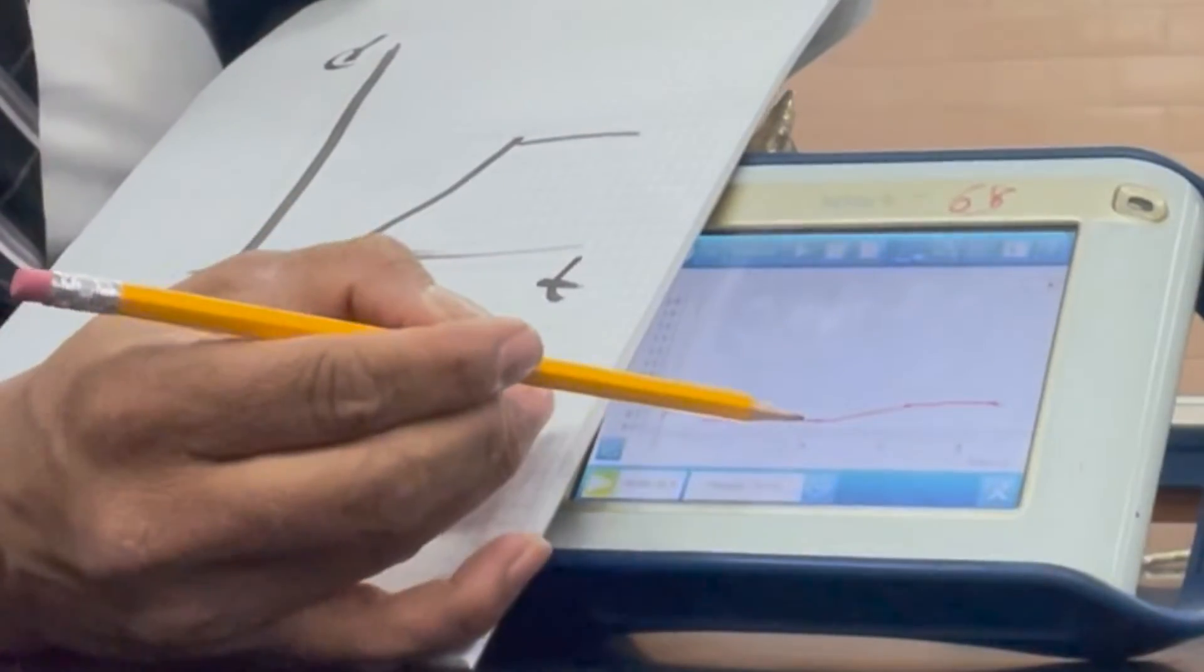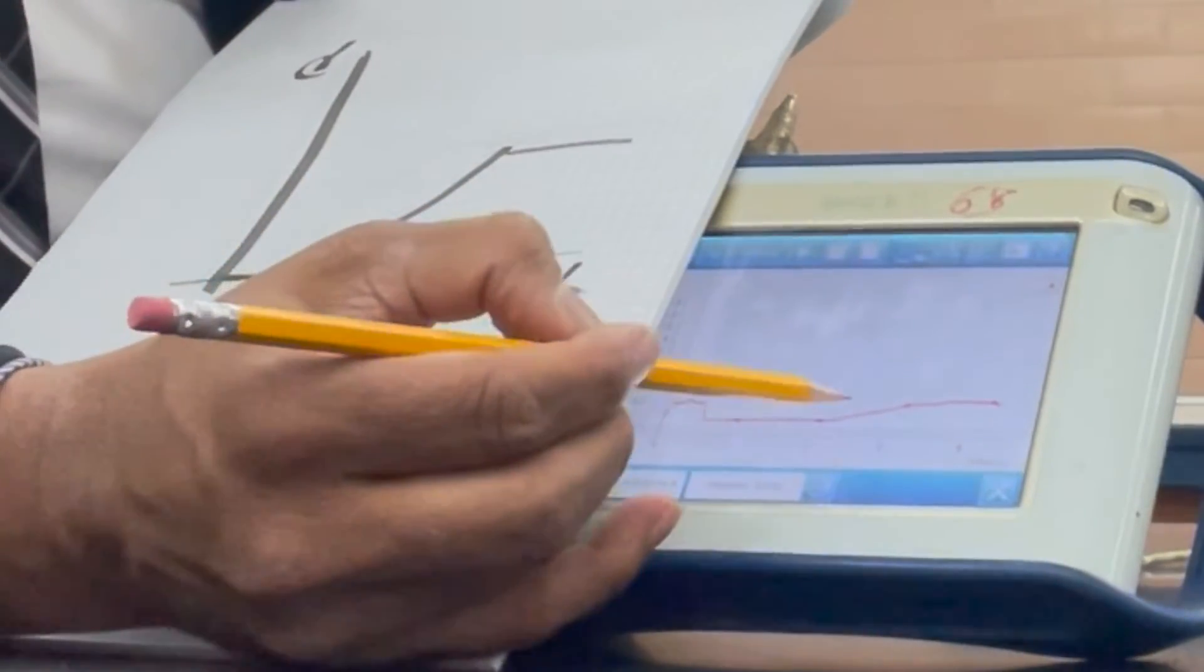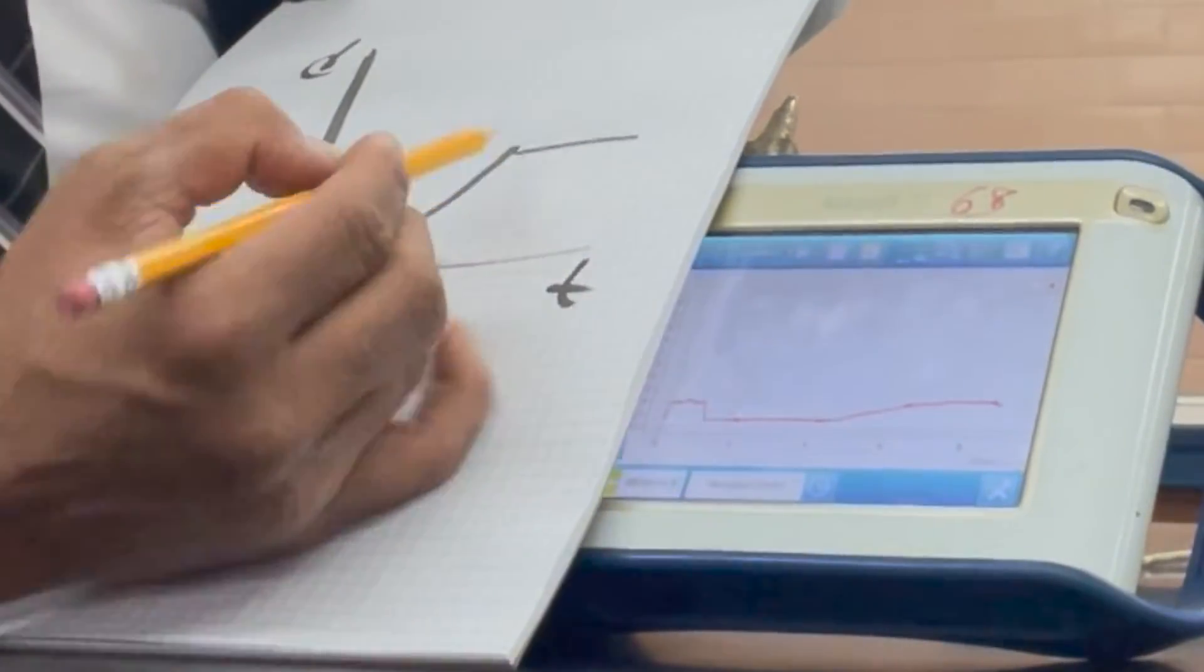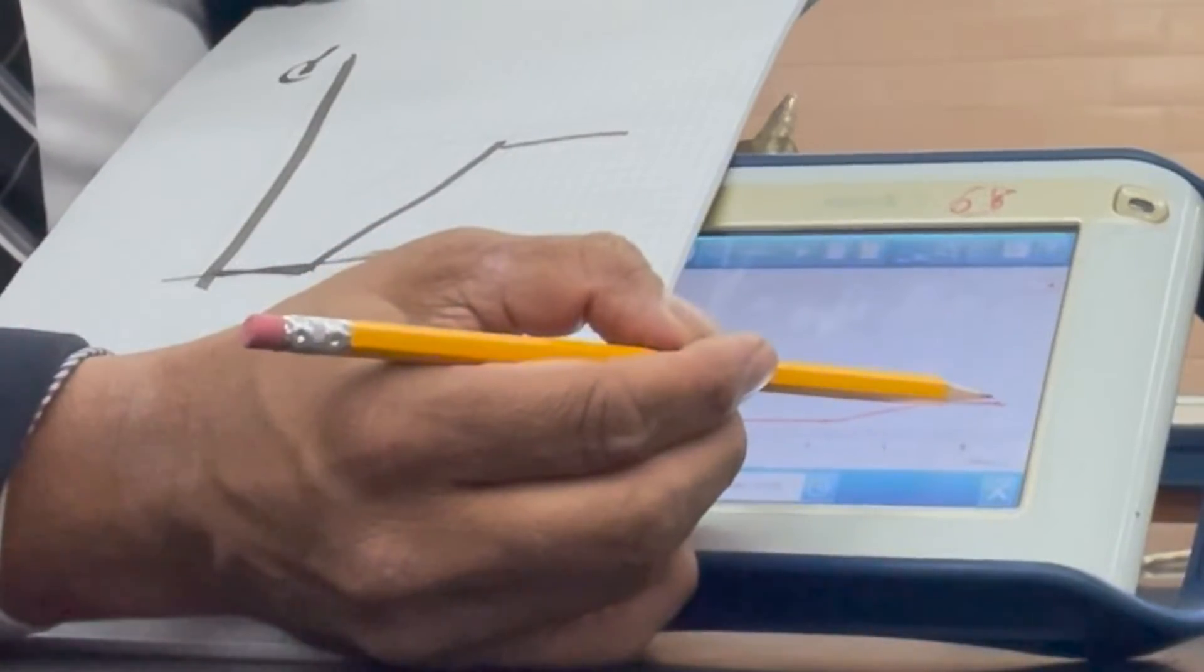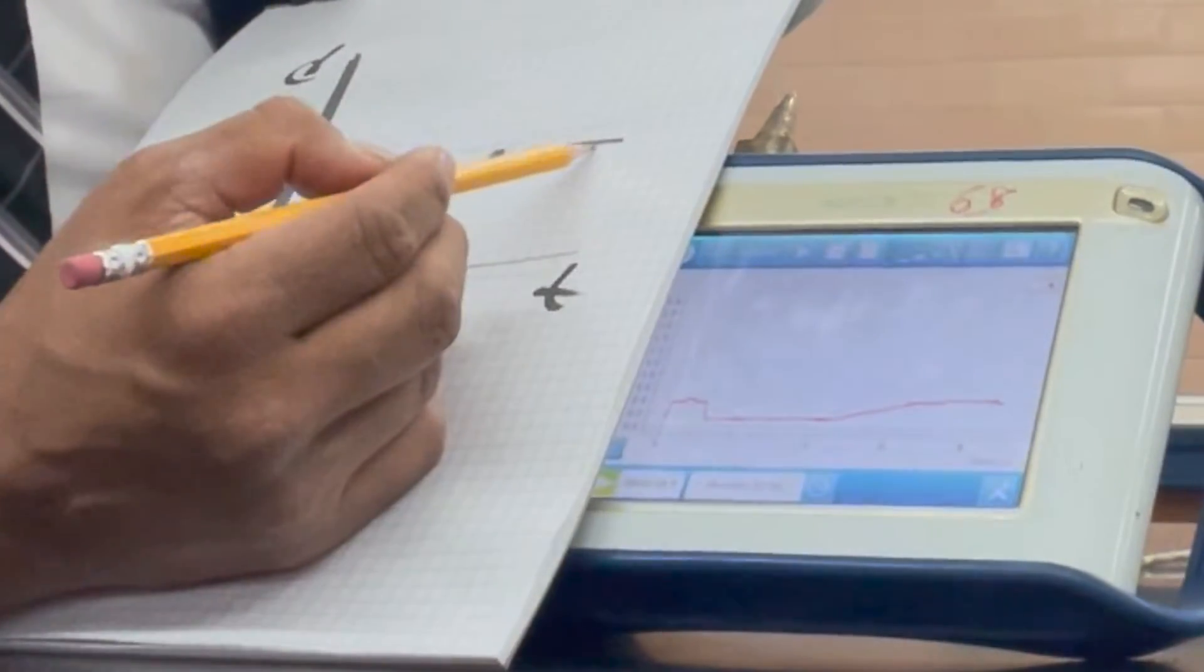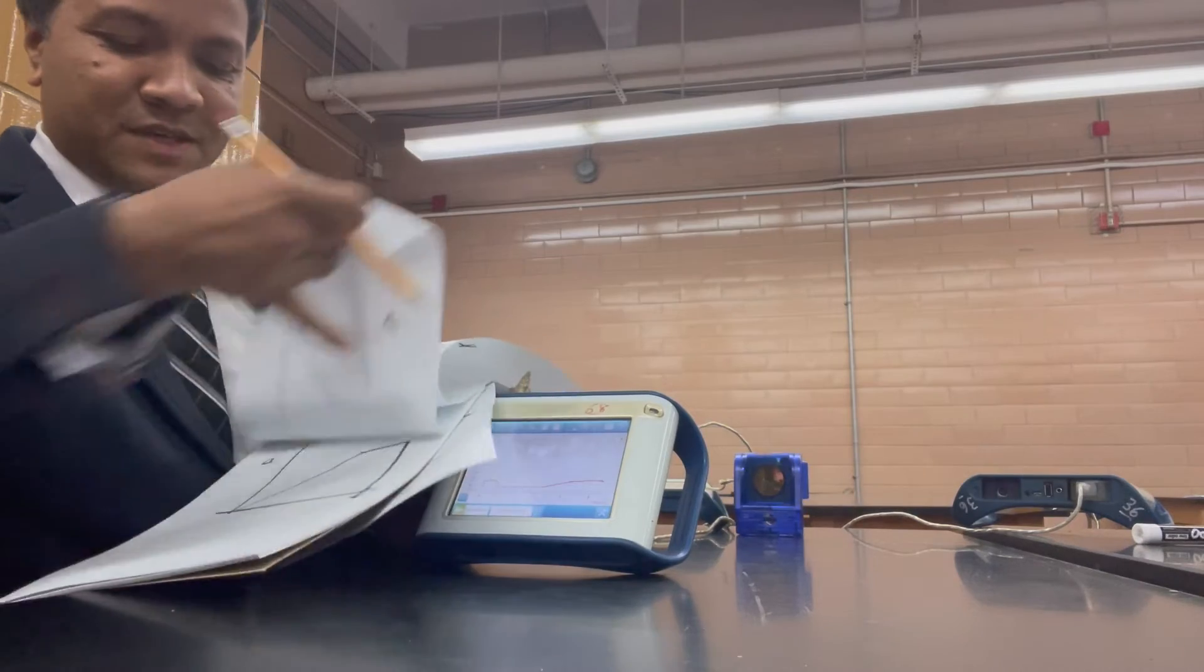This part, object is at rest. This is object at rest. This part, object is at constant motion. This past, object is rest again. This part, object is at rest again. Now we're going to do this one.